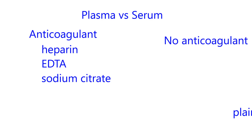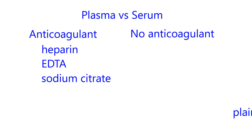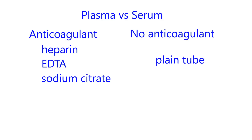If you have no anticoagulant in the tube, you spin the blood just like in the plasma case. But if you have no anticoagulant, then the top fluid portion is called serum, because serum is what's left over after a clot is formed. So to collect serum, you would use what's called a plain tube — a tube with no anticoagulant.